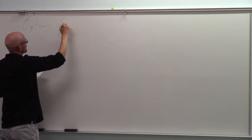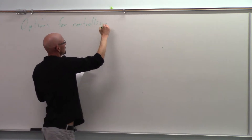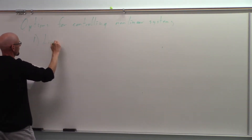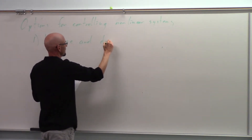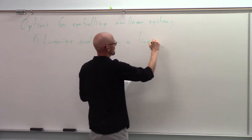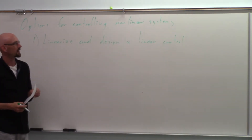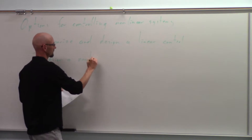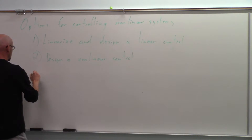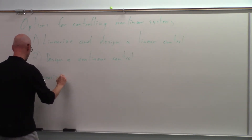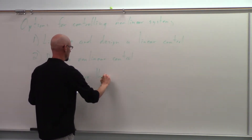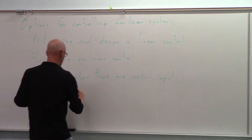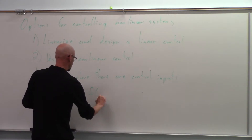Our options for controlling nonlinear systems: the first thing you would try is to linearize and design a linear control. If the performance wasn't satisfactory, then you would look at designing a nonlinear control. We talked about linearization before, but now we need to address linearizing when there are control inputs, since we treat the control input u differently than the state.